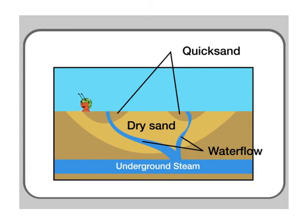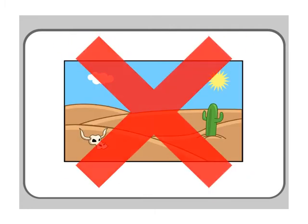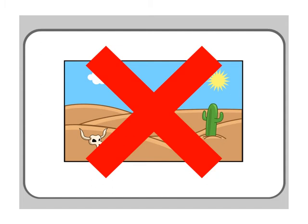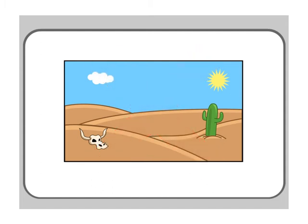Many people think that quicksand can be found in a desert, but that's not true. Deserts have plenty of sand, but they don't have much water.